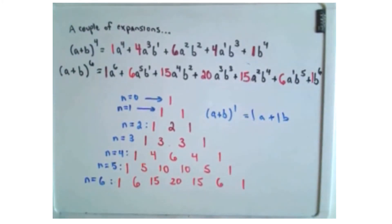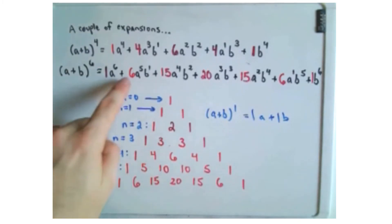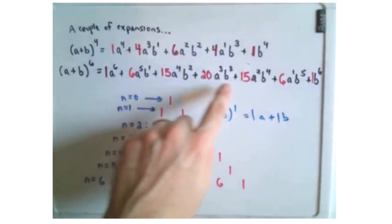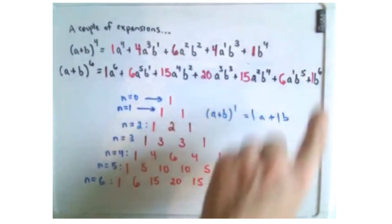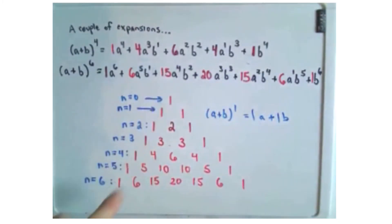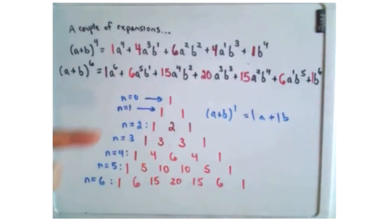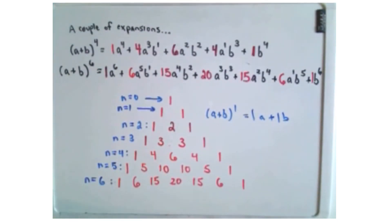So that's a neat little trick to get the binomial coefficients. You just make this Pascal's triangle, fill it in, and find the appropriate row that you need.